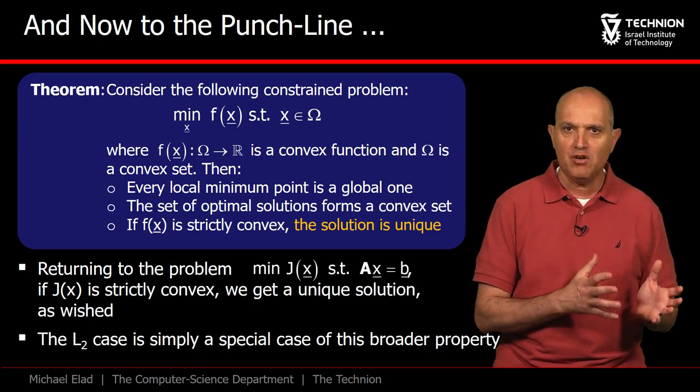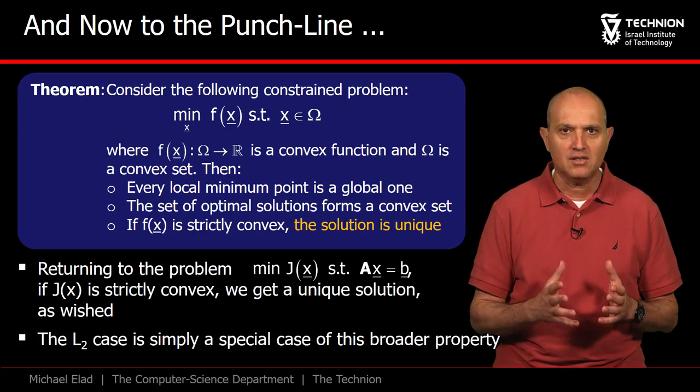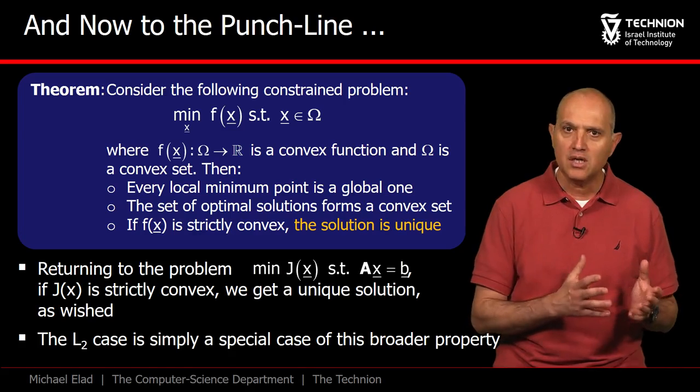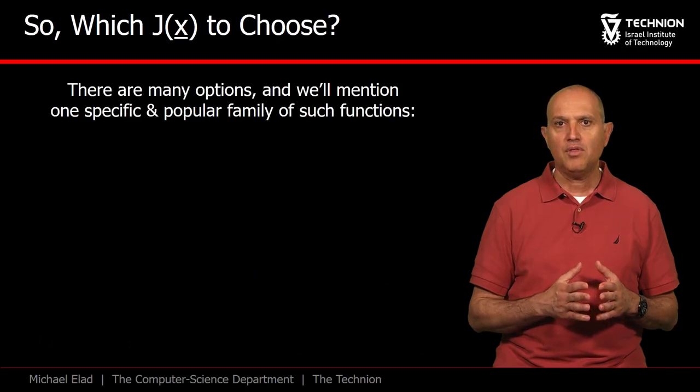The implications for us are very clear. If the regularization function J of x is strictly convex, then the best solution among the set Ax equals b is unique, just as it was for the L2 case.